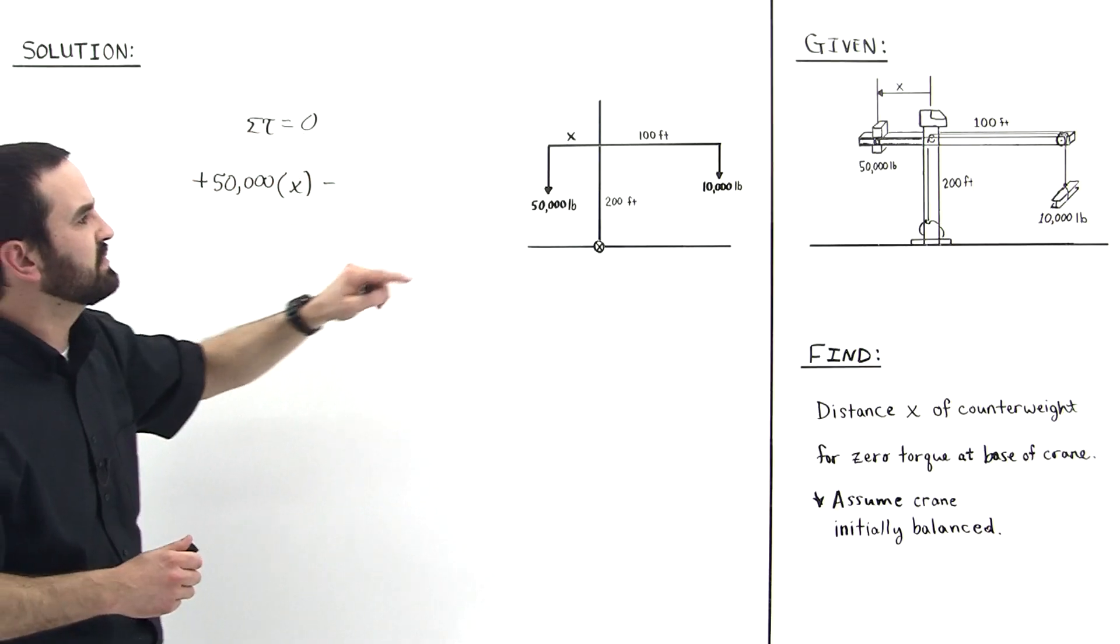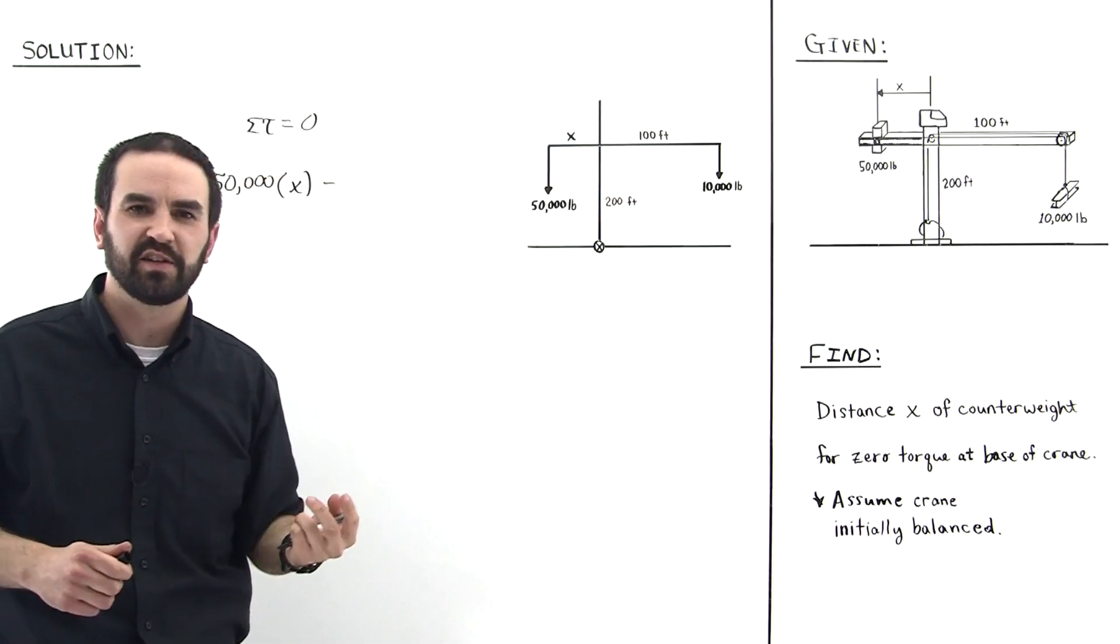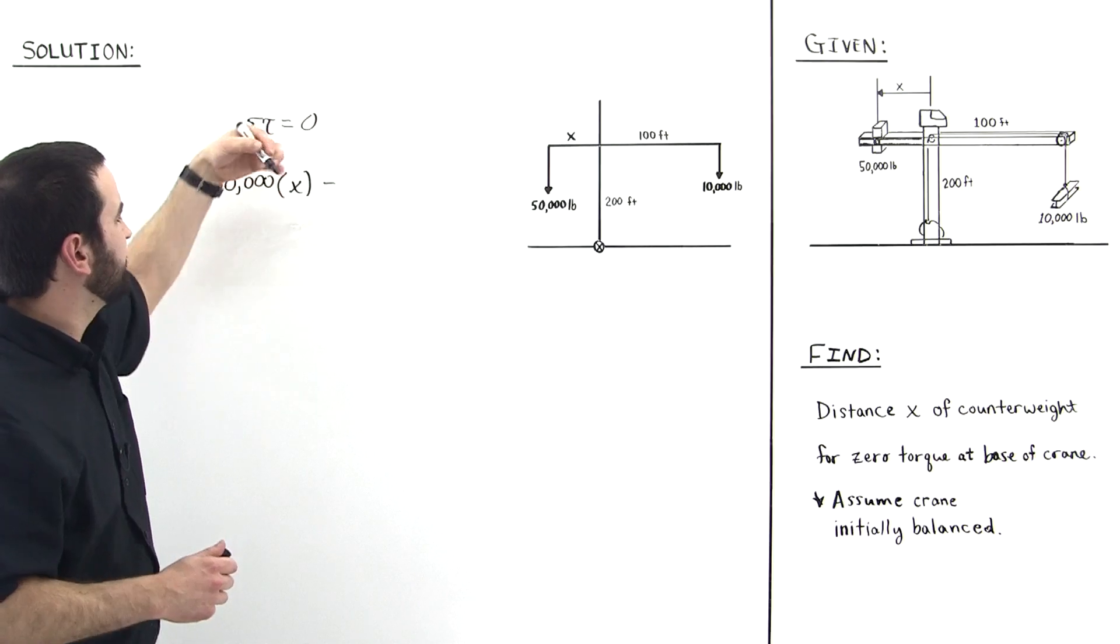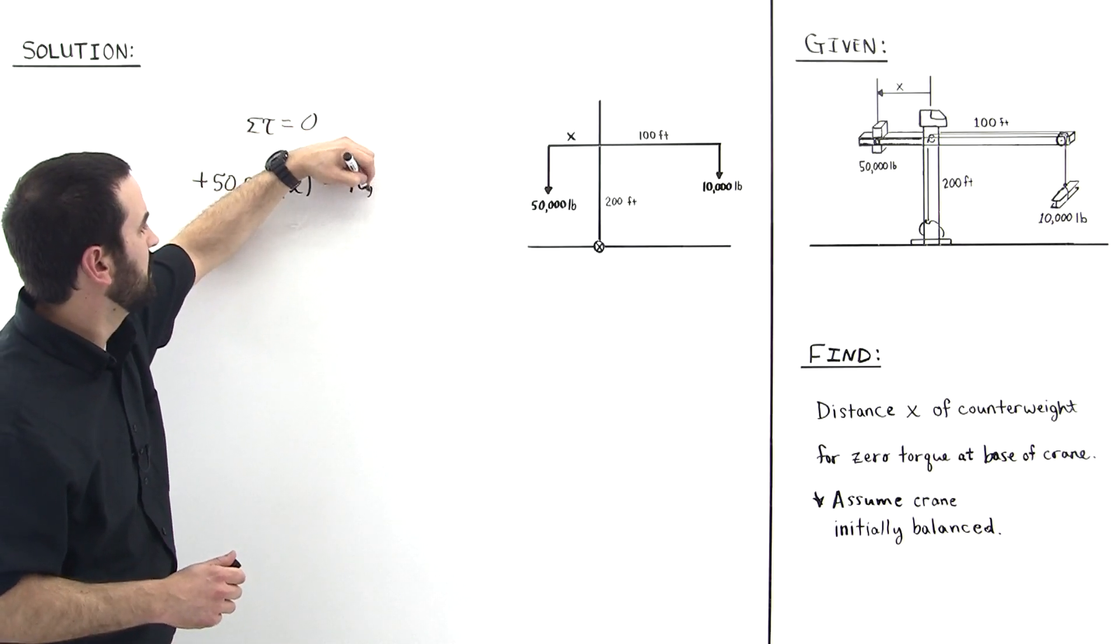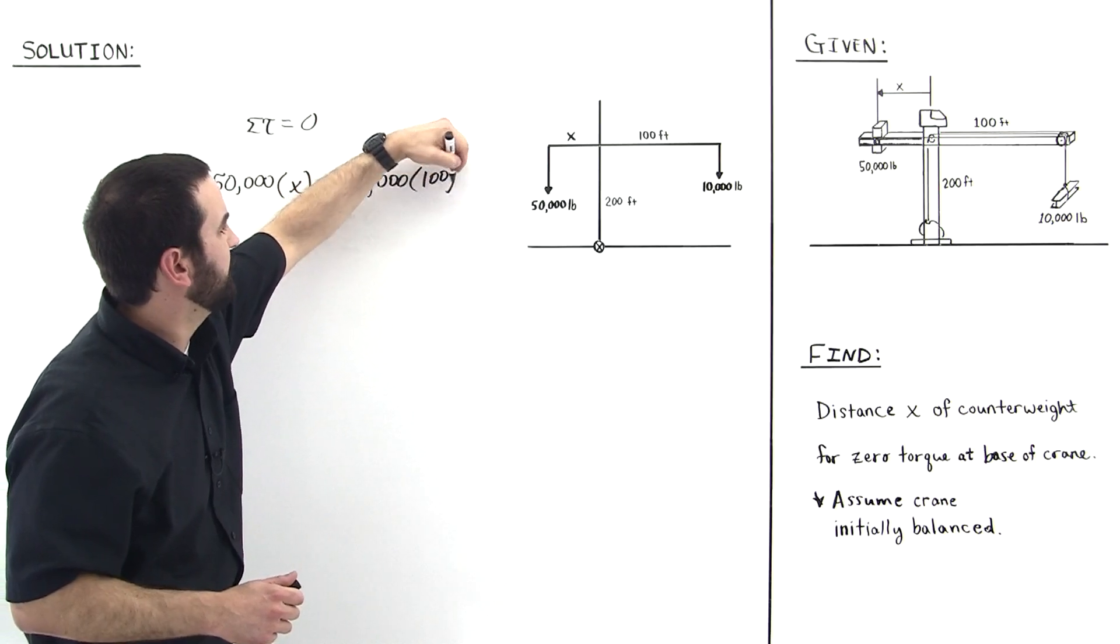So minus 10,000 times 100 feet. Notice that the height of the crane doesn't factor into the calculation whatsoever. So minus 10,000 times 100, and that is of course equal to zero.